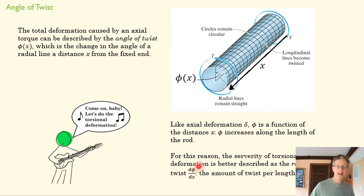If we want to really talk about the severity of torsional deformation, it's in some ways better to talk about the rate of this twist, which would be the change in the angle of twist as we moved in the x direction, d phi dx. This term shows up later as we start to talk about ways of describing twist.